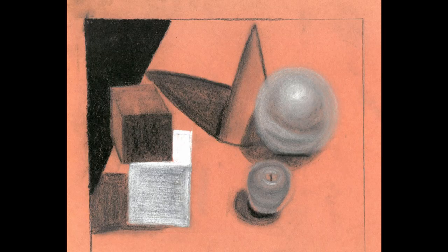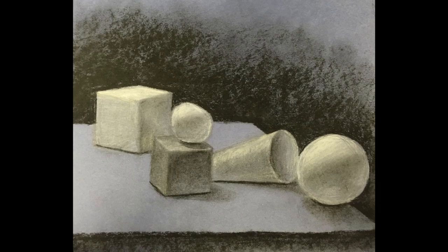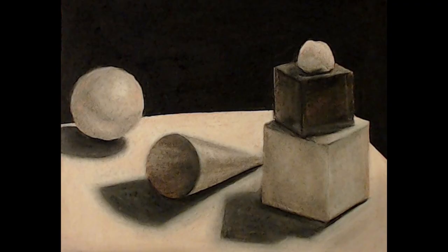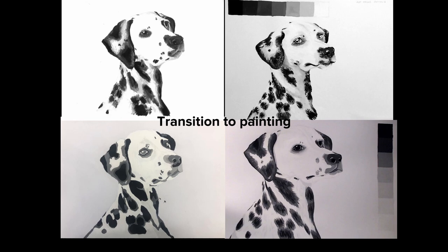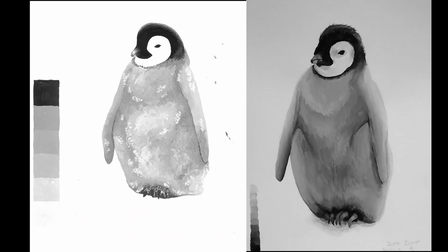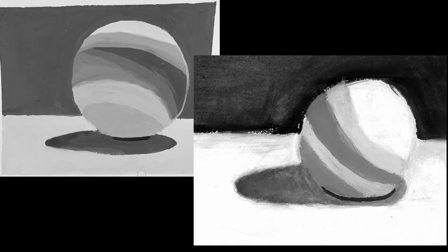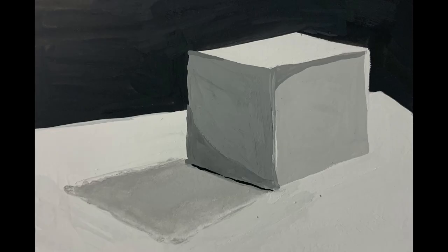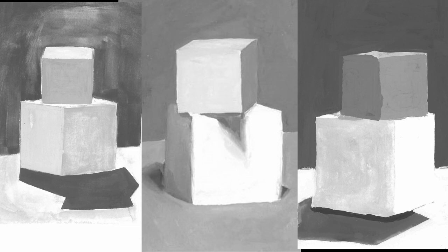Then we move into playing around with local value — that is, whether something is black, gray, or white. After we have gotten a firm grasp of value in charcoal, we transfer over to gouache. With a strong foundation of perspective, students use value ranges to help reveal how light interacts with form.